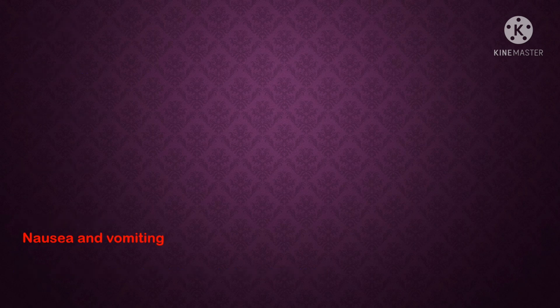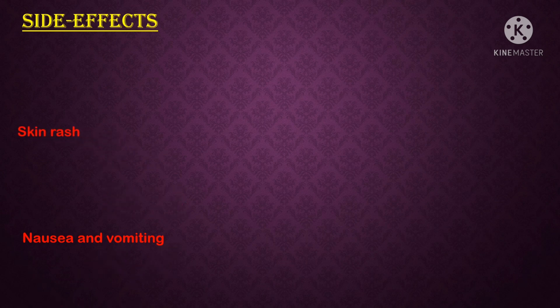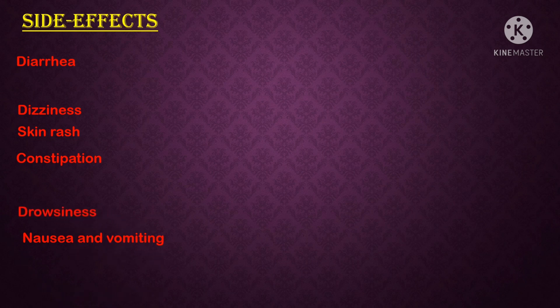The last part is the side effects of ranitidine. Overdose of ranitidine shows different types of side effects such as nausea and vomiting, skin rash, constipation, diarrhea, dizziness, drowsiness, headache, and stomach problems. If these side effects occur after taking ranitidine, please contact your physician or pharmacist.